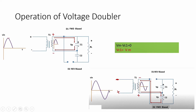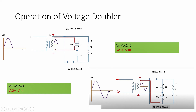Since it is a closed loop, we apply KVL. Considering the maximum secondary voltage Vm, the equation is: +Vm − VC2 = 0, therefore VC2 = Vm. Now both C1 and C2 are charged to Vm. Since C1 and C2 are connected in series, the voltage across RL is VC1 + VC2 = Vm + Vm = 2×Vm. So the output voltage is twice the maximum voltage of the input.